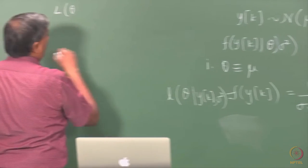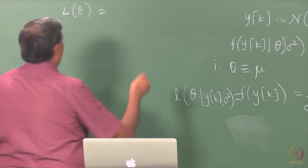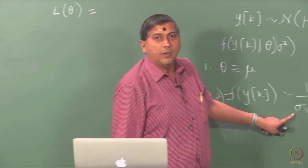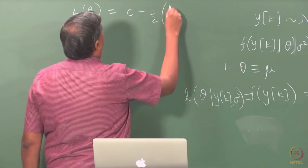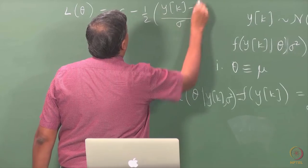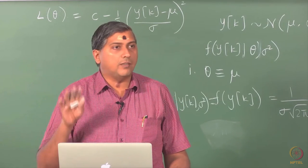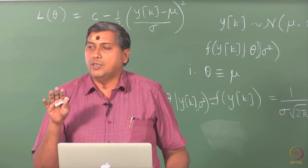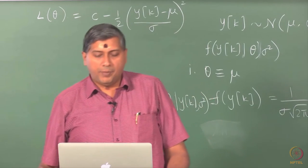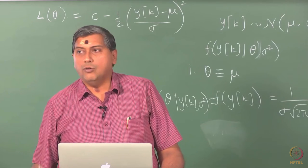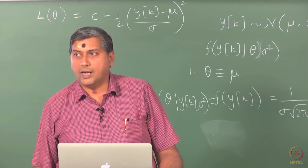Now that we have the log-likelihood, the next step is to differentiate it twice, because Fisher's information can be computed as the negative expectation of the second derivative of the log-likelihood. It is better to explicitly state the likelihood as a function of theta given y_k and sigma squared, though for convenience I will write it just as a function of theta with the conditioning understood.